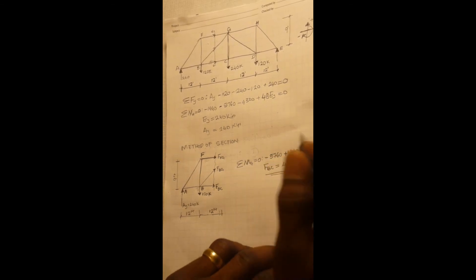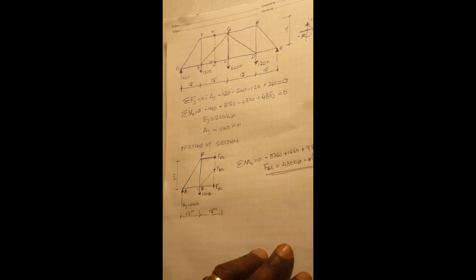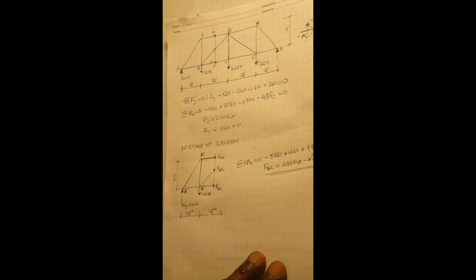So we have the magnitude of the force and we have the direction of the force. So that's how to solve for a member with the method of section in a truss. Thank you.